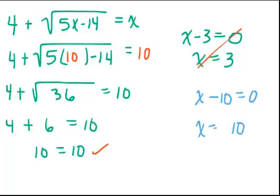Therefore, we threw out the x equals 3, but we will keep the 10 in our solution set. So 10 is the only solution that works for this radical equation.